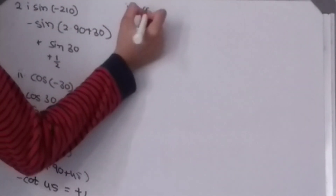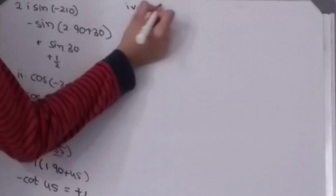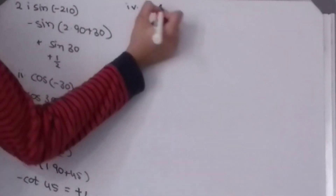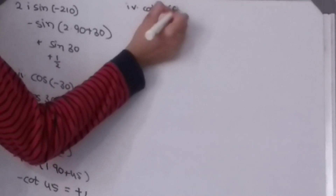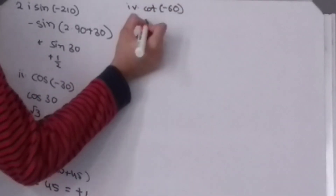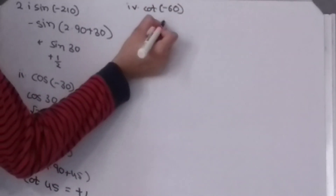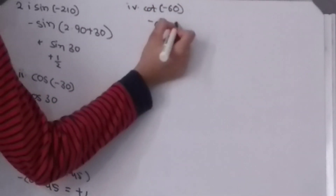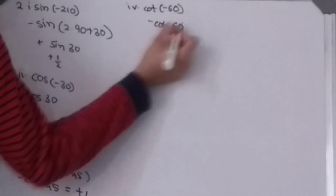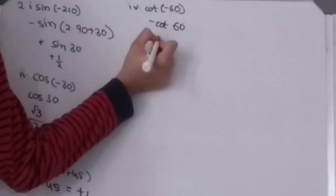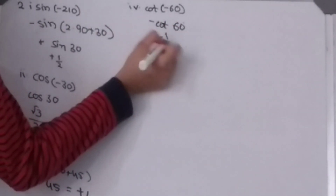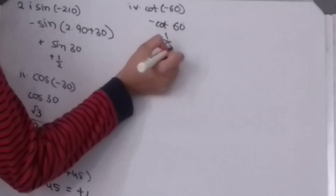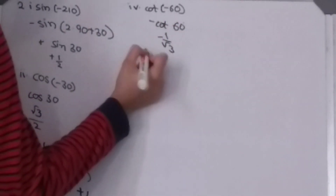Next: cos(−60°). Then minus cos(60°), which is nothing but minus 1/2.